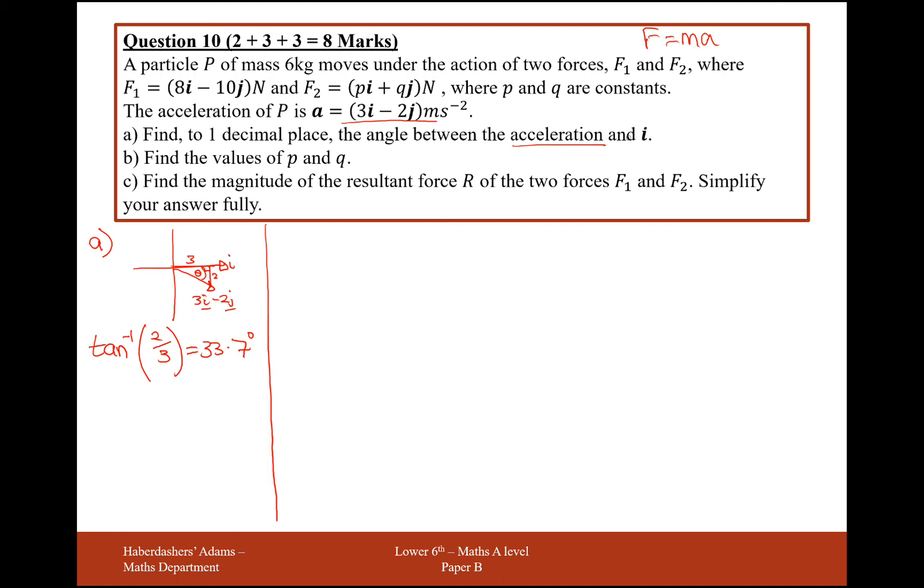And this will give you 33.7 degrees. Yeah, so the angle between the acceleration and I is 33.7 degrees. It says on the mark scheme here that it's minus 33.7 degrees here as it's underneath it, so you can always just write that just to be safe.